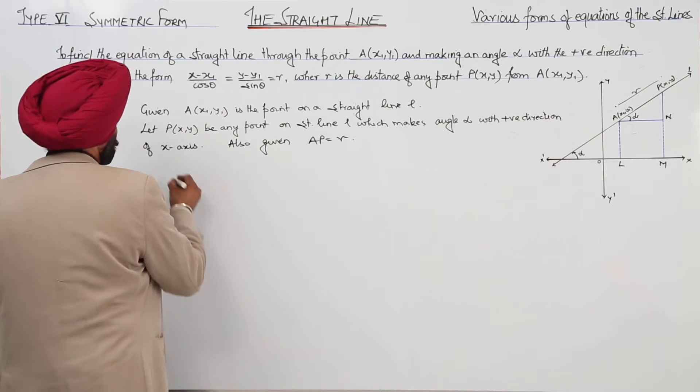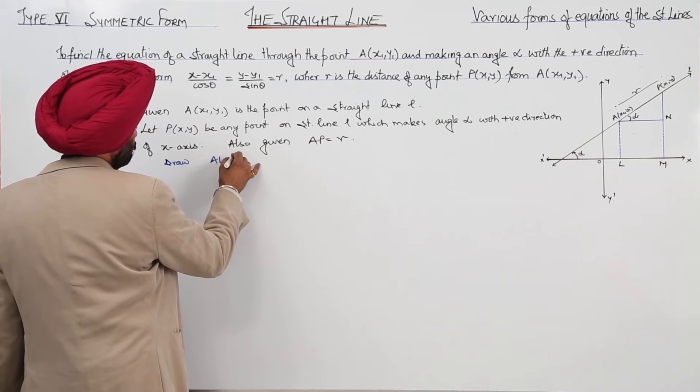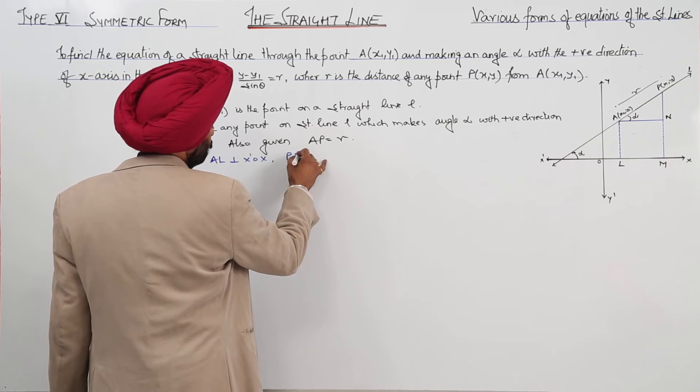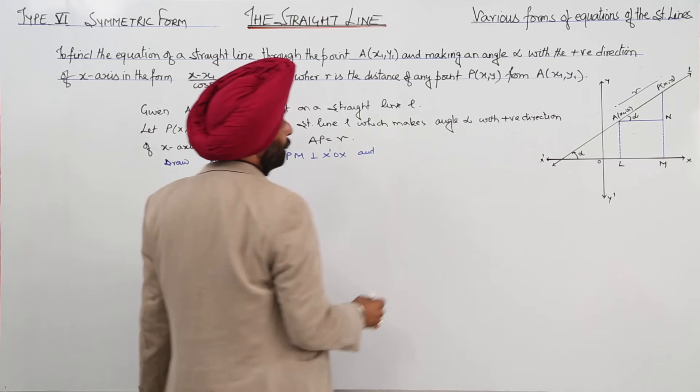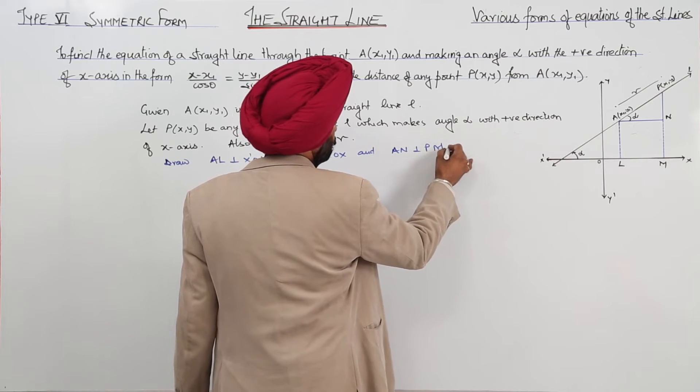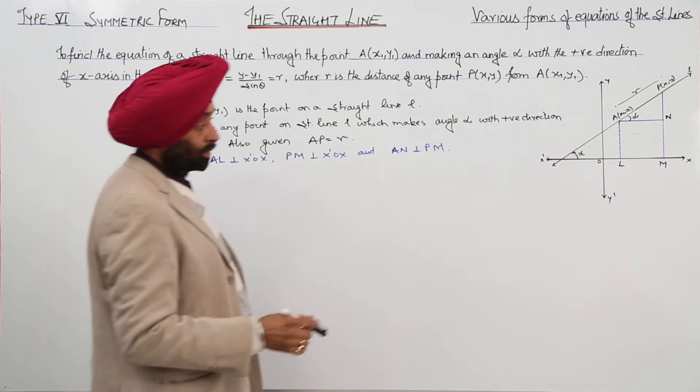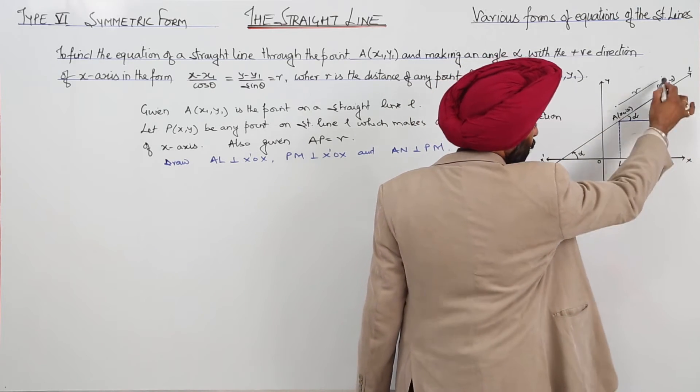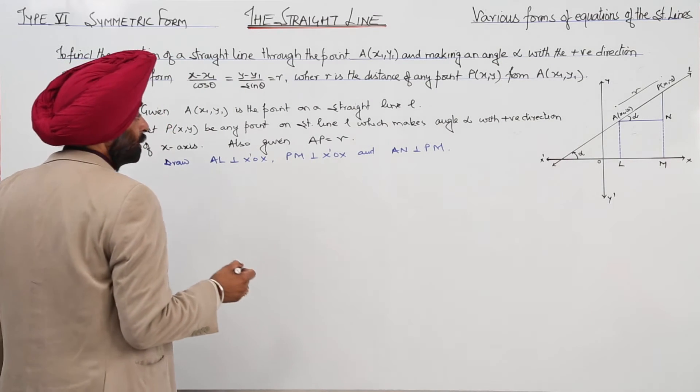Now, draw AL perpendicular on x-axis, then PM perpendicular on x-axis, and AN perpendicular on PM. This we have to draw. I have drawn in blue. AL perpendicular on x-axis, PM perpendicular on x-axis, and AN perpendicular on PM.